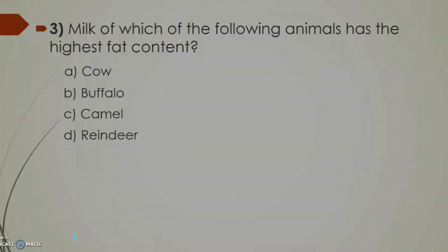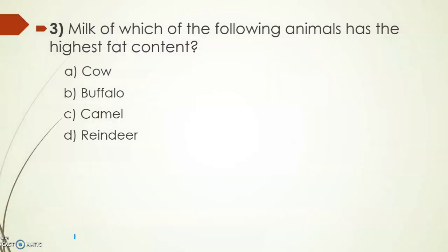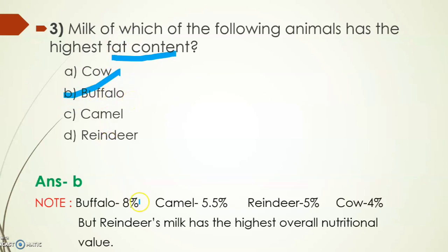Next: milk of which of the following animals has the highest fat content? Its answer is option B. Buffalo's milk contains maximum amount of fat. The fat content in buffalo milk is the highest at 8 percent, camel has 5.5 percent, reindeer has 5 percent, and cow has 4 percent. But if we look at overall nutrition and other nutrients in milk, those are found in reindeer. So the highest nutritional value is in reindeer milk.